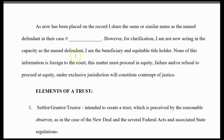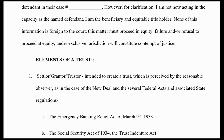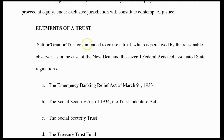None of this information is foreign to the court. This matter must proceed in equity — you're shifting the jurisdiction. Failure and refusal to proceed in equity under the exclusive jurisdiction will constitute contempt of justice. If you bring this forth and they try to move forward, do you have an appeal? This gets into a little bit more about the elements of a trust.